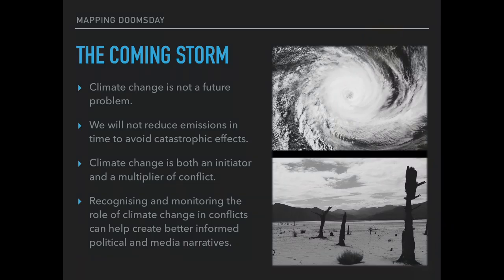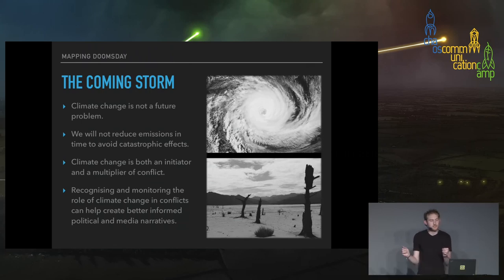When we talk about climate conflicts and climate change, it's very important to remember that climate change is not a future problem. The media often talks about how in 10, 15, or 20 years it's going to be this bad, but we need to remember that climate change is already here. Scientists say global temperature has risen about one degree since pre-industrial times. Moreover, even in the best case scenario where nations meet their Paris climate agreement targets, this will still not be fast enough to avoid significant catastrophic effects — and among the most catastrophic are the conflicts which are caused by it.